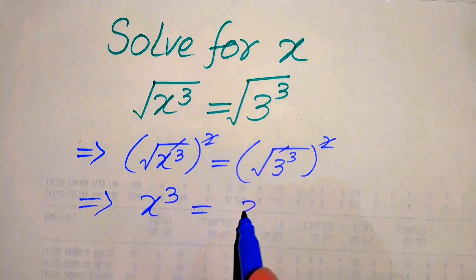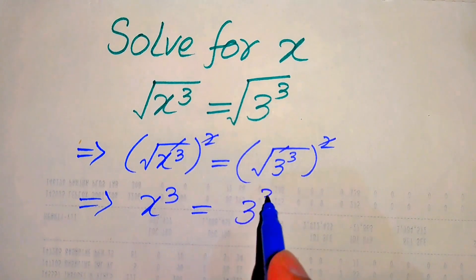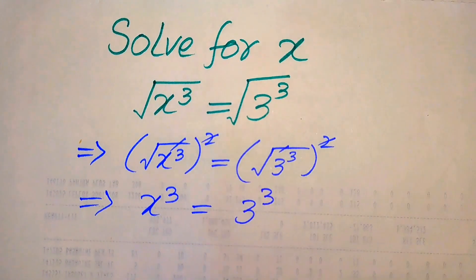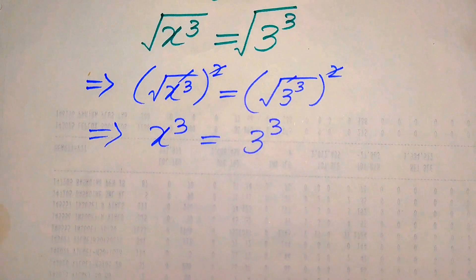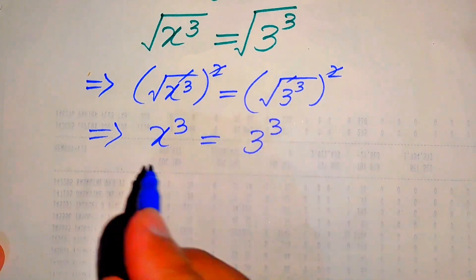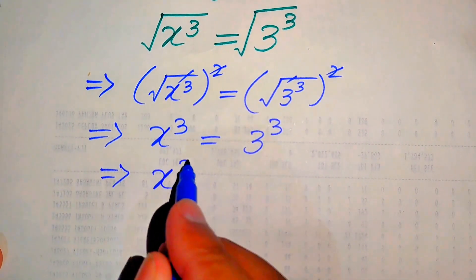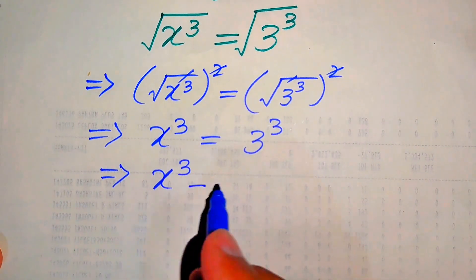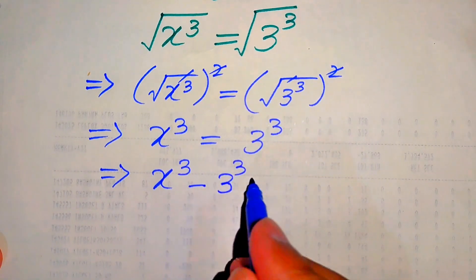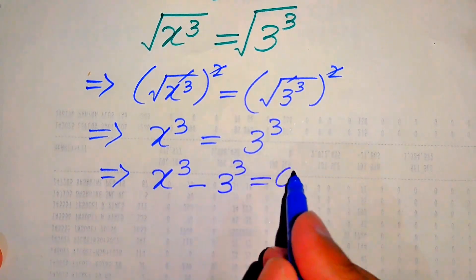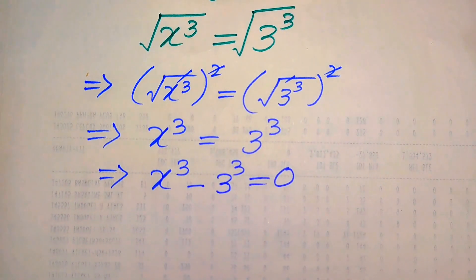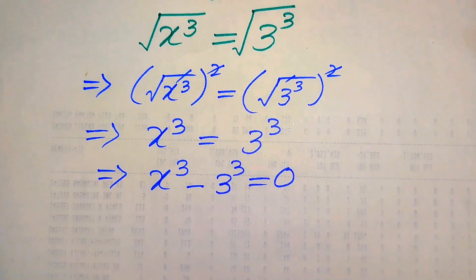The square and root on the right side also cancel, and we get 3 cubed. Now in the next step we move 3 cubed to the left hand side, so it will be written as x cubed minus 3 cubed equals zero.